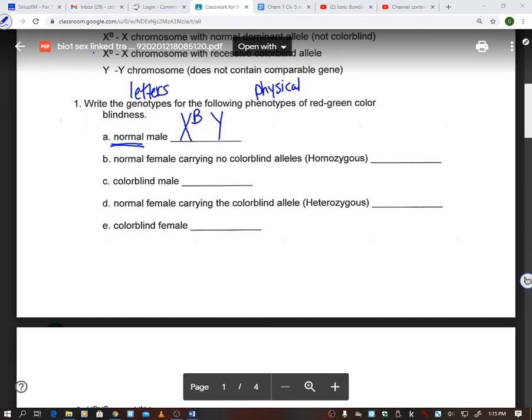Now, B, a normal female. So before I do anything, I'm going to put XX because that's a female. Now I'm going to deal with the little letters up above. They're not colorblind, but they are homozygous. Remember that this means same. So if you're not colorblind, you have a capital B, and they're telling you that you are homozygous for that. So two capital Bs.